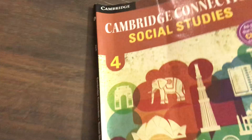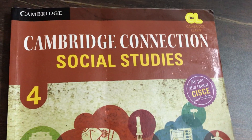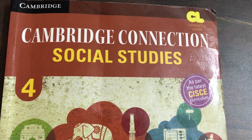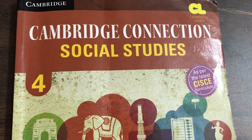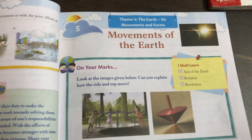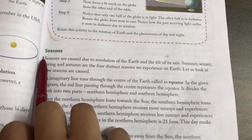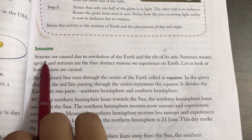Let's start with the lesson. Open your booklet of Cambridge Connection Social Studies of Standard 4, Chapter number 5: Movements of the Earth, page number 27. We will start from the seasons — our remaining lesson.